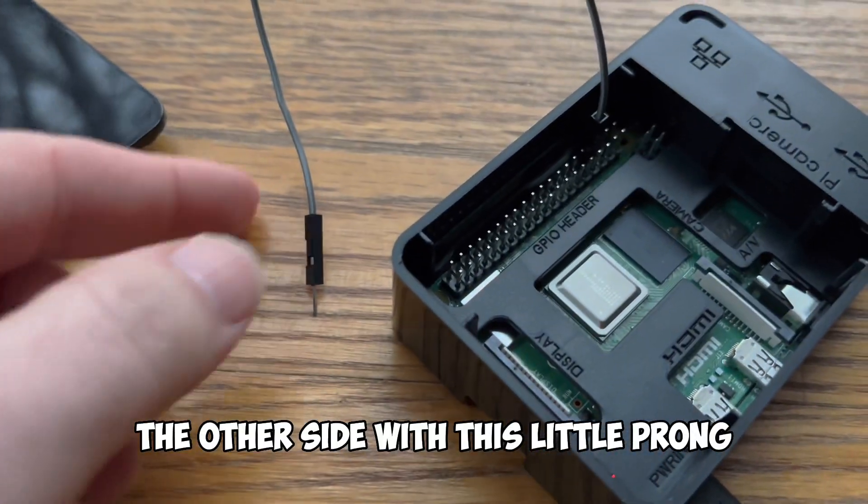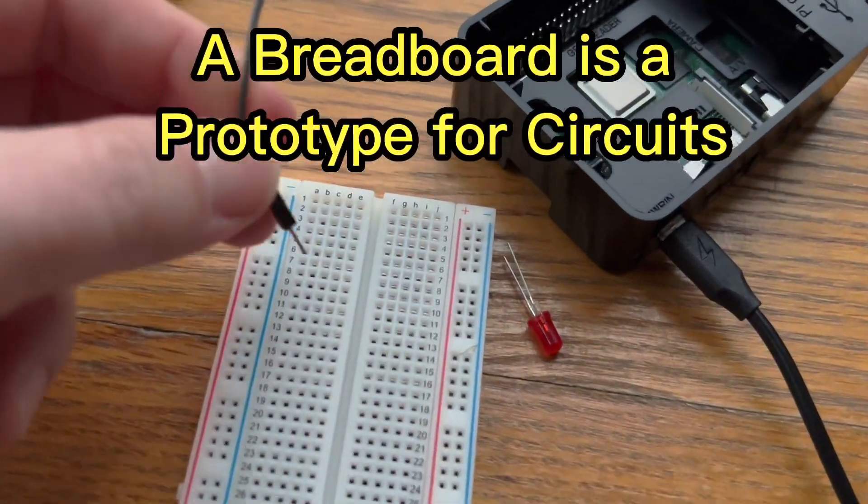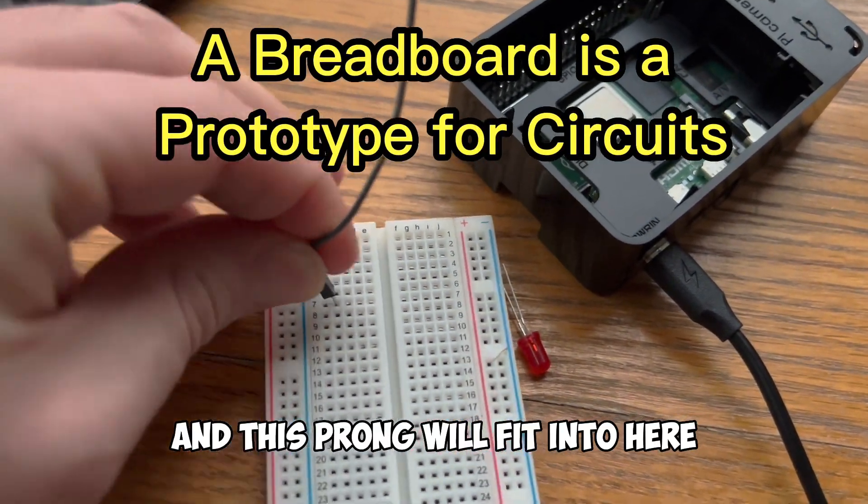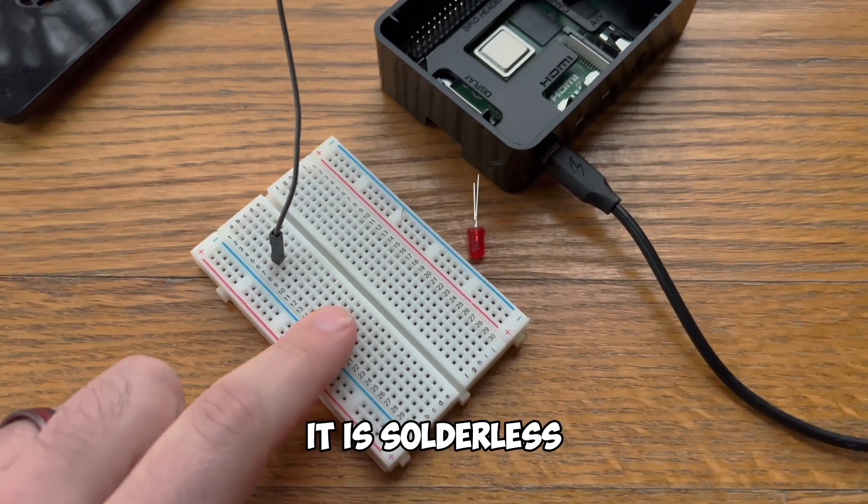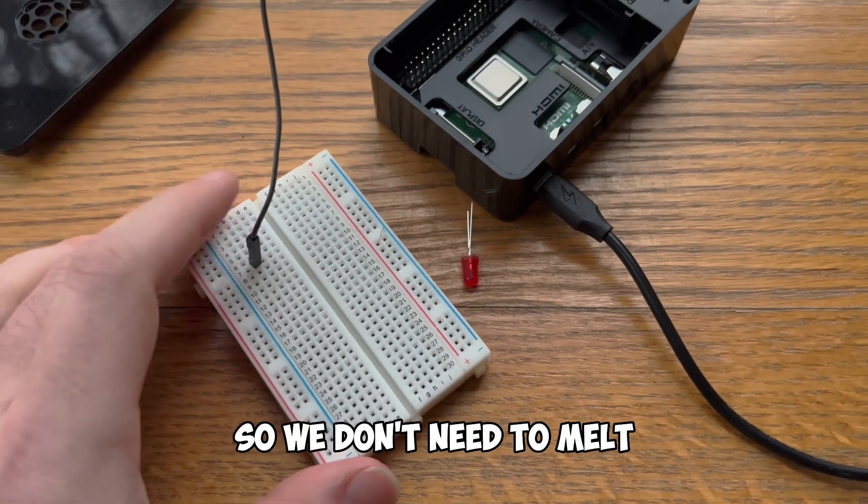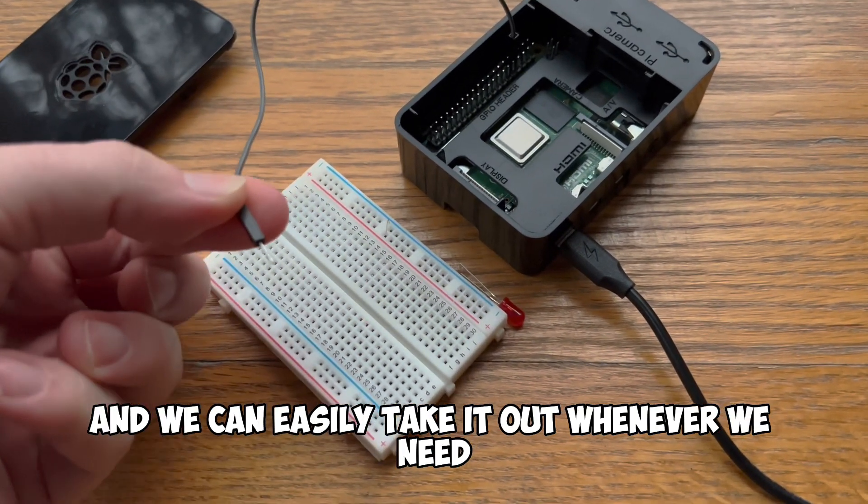The other side with this little prong is going to be able to fit into what we call a breadboard and this prong will fit into here. This breadboard is a great prototype for building circuits. It is solderless so we don't need to melt this little metal prong onto it and we can easily take it out whenever we need.